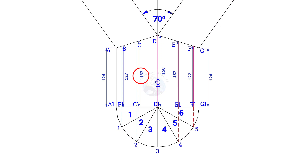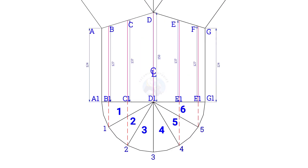Now calculate the circumference of the pipe. Multiply the pipe diameter by 3.14 or pi. Since the diameter of the pipe is 168, multiply it with 3.14.